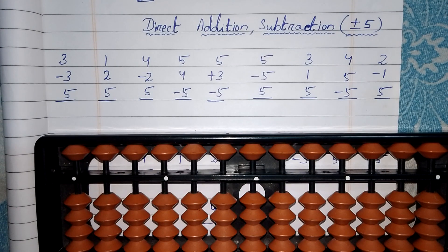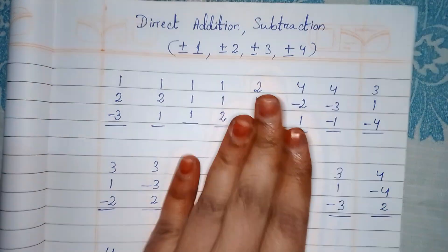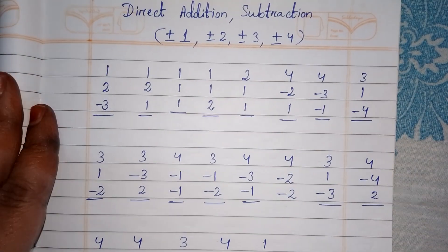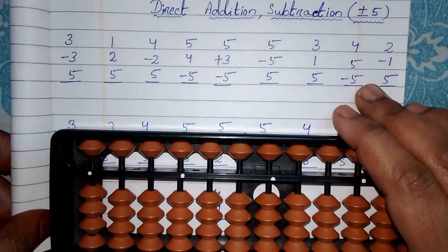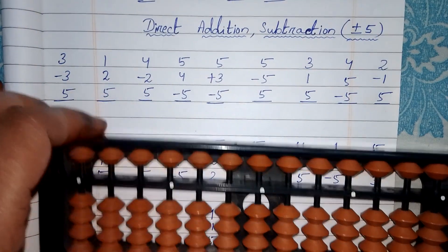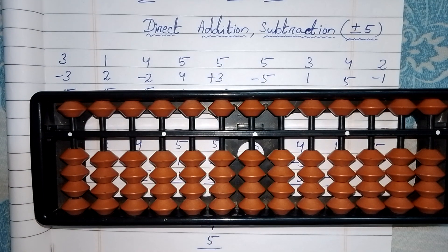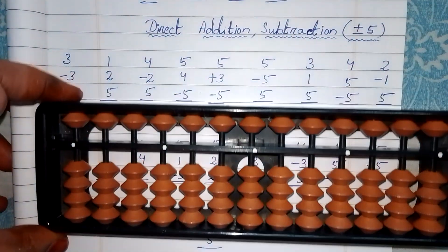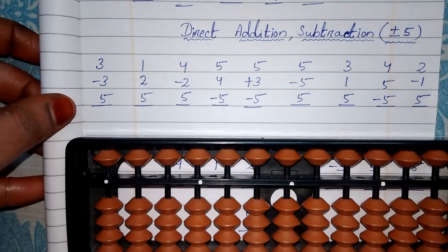Hello everyone, how are you all? In previous videos I explained about direct addition and subtraction of one, two, three, four. Now I hope you got that concept clearly. The next topic is direct addition and subtraction of five — how to add five or subtract five on abacus. Today we are going to learn about that. Watch carefully; this one is also very easy to understand.